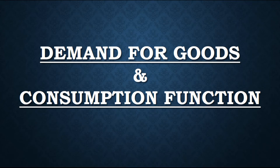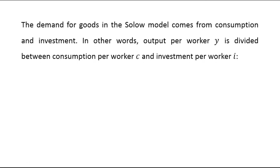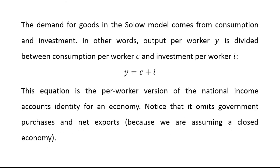The next topic is demand for goods and consumption function. The demand for goods in the Solow model comes from consumption and investment. Output per worker, denoted by y, is divided between consumption per worker and investment per worker. We can write this equation as y equals c plus i. This is the per-worker version of the national income accounts identity, omitting government purchases and net exports because we assume a closed economy.